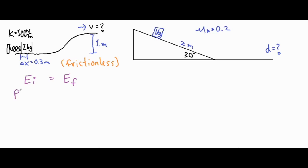At the initial position the object is not off the ground, it's at rest, and it's just compressing a spring, so we have elastic potential energy — PE sub e or U sub e. At the final position it's no longer compressing a spring, so no more elastic energy, but we do have gravitational potential energy and it's moving, so we have kinetic energy as well. We break these three types into their full formulas and plug in our numbers to solve for the final velocity.